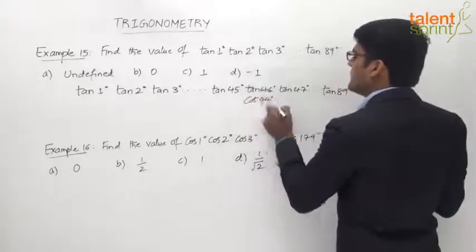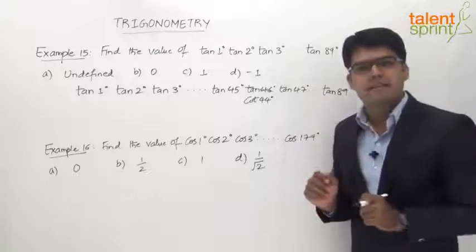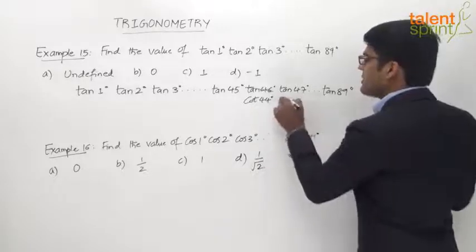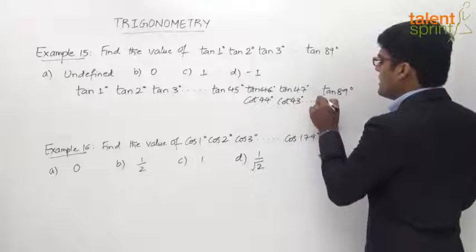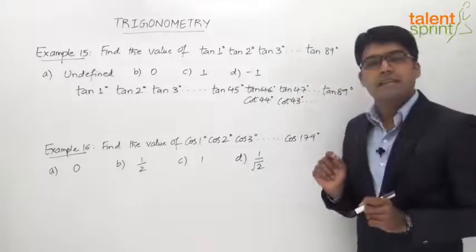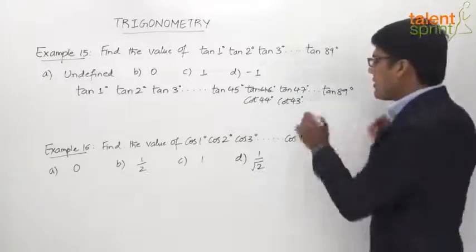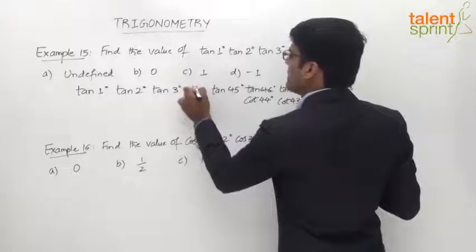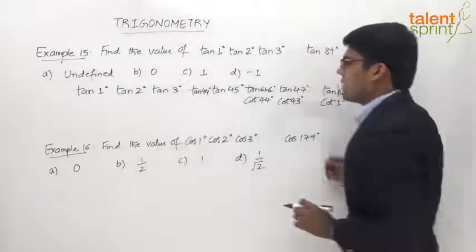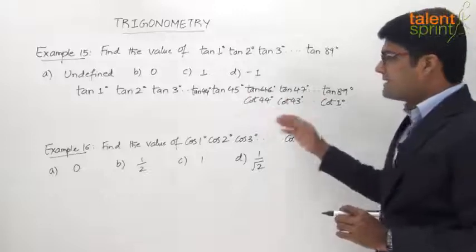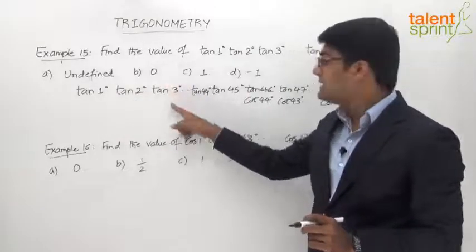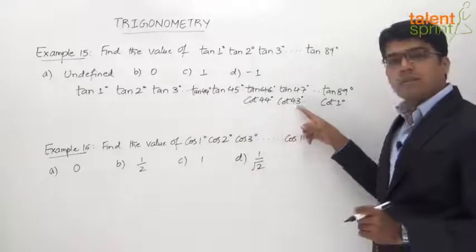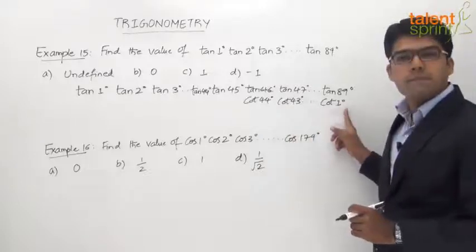Likewise, tan 47° = tan(90° - 43°) = cot 43°. Continuing this way, tan 89° = tan(90° - 1°) = cot 1°. And just before tan 45°, we have tan 44° and so on. So the complete series becomes: tan 1° × tan 2° × tan 3° ... × tan 43° × tan 44° × tan 45° × cot 44° × cot 43° × cot 42° ... × cot 1°.